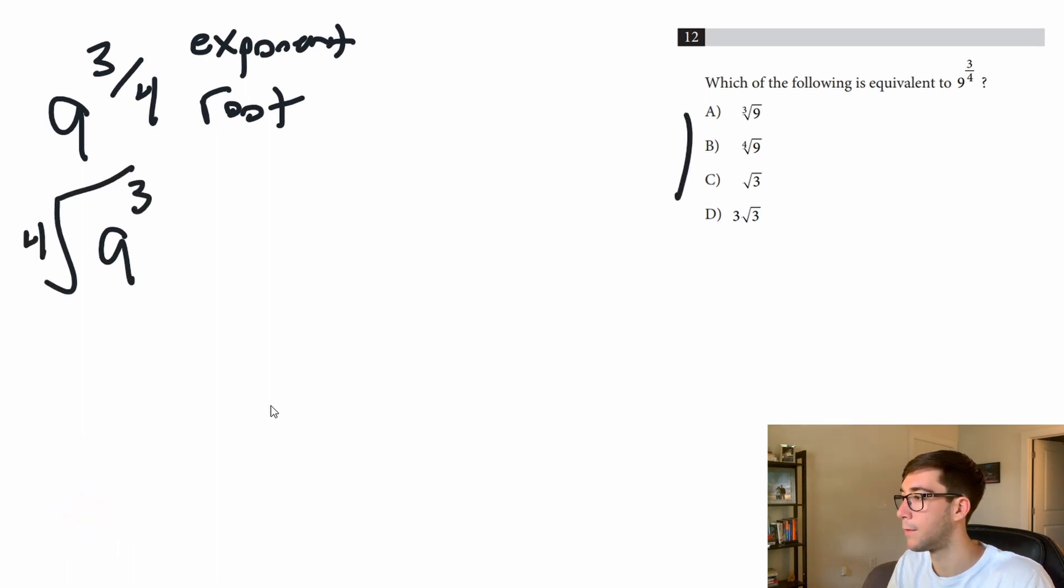But if we look at our answers, none of them have that. So the harder questions are going to ask you to manipulate this a little more. And in these questions, you're always going to see that the number here is a perfect square. 9 is 3 squared.